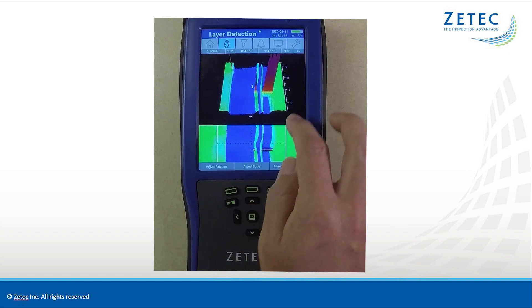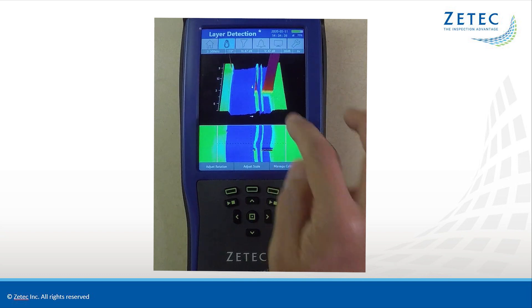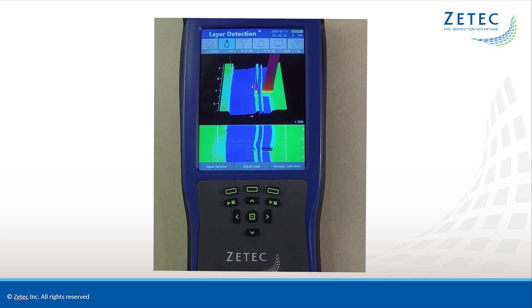This is just another way the MIS-21C takes bolt hole inspections to the next level. The MIS-21C makes bolt hole inspections fast, accurate, and easy to perform.